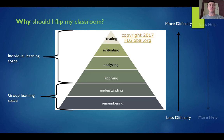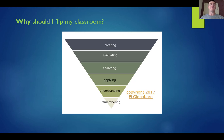The problem is that in the group learning space, that's where we as teachers can provide the help students need — but that's where the easy stuff is. In the individual learning space, where the hard stuff is, that's where we're not, and we can't do anything for the students in that space. Now if we just flip Bloom's taxonomy, we end up with this.